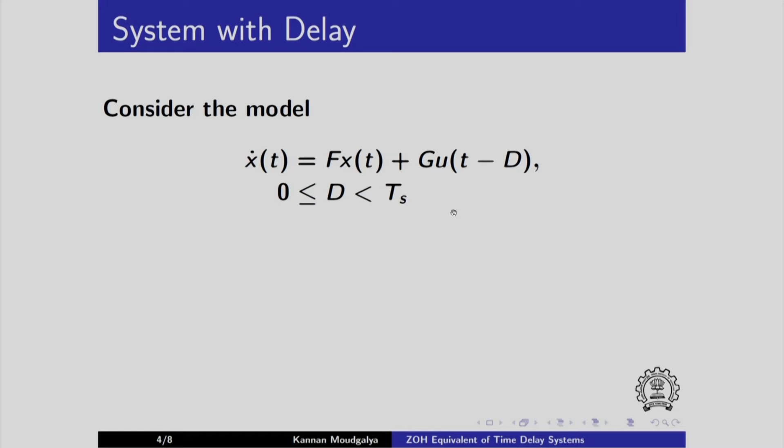What is the time delay system? This u is no longer u of t, but u of t minus d. The input of d seconds before is used now, if we assume that the current time is t and this d is taken to be lying in the interval zero to Ts.